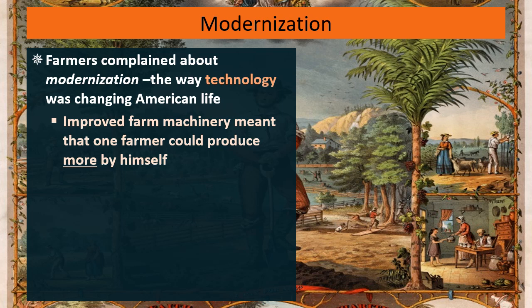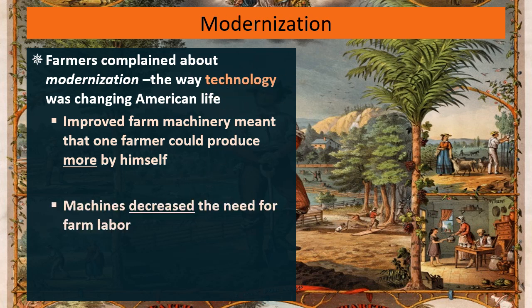More machinery meant that a farmer could produce more by himself without help. At the same time, prices would drop and he didn't need to hire extra workers for his farm. So you've got a whole bunch of people who don't need to work on farms anymore — many of them will move to cities and end up working in factories.